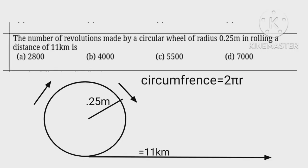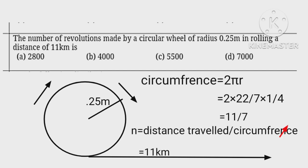Circumference equals 2 pi R equals 2 times 22 upon 7 into 1 upon 4 equals 11 upon 7 meters. Hence number of revolutions equals distance traveled upon circumference, that is 11,000 into 7 upon 11 equals 7,000.